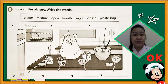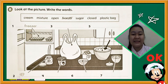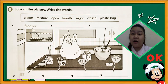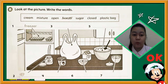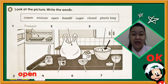Page 29, letter B — look at the picture and write the word. We have the words: cream, mixture, open, freezer, sugar, closed, and plastic bag. Note that the word freezer is already given. Look at number 2 — notice the jar. What word best describes what is happening here? Correct — the jar is open.